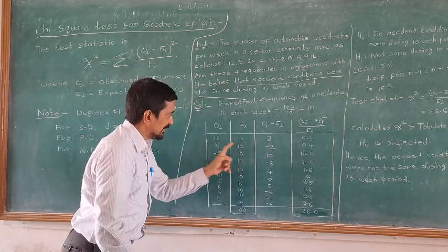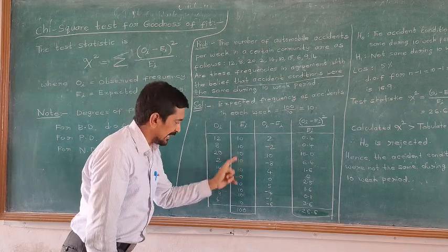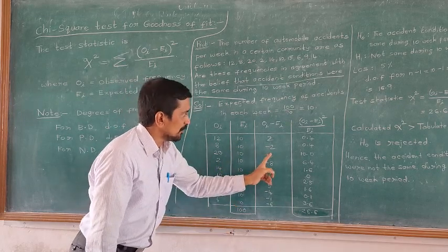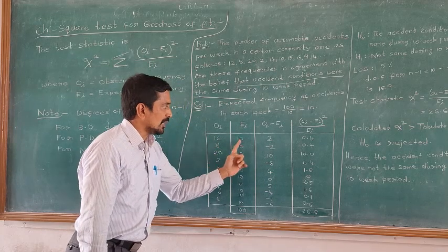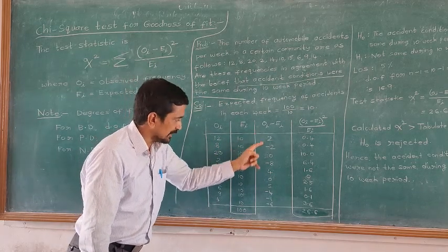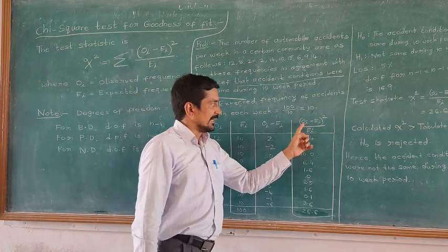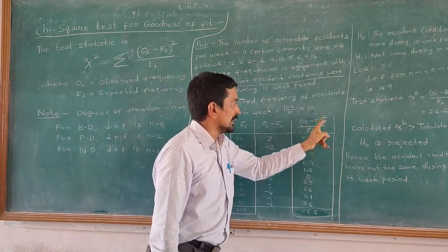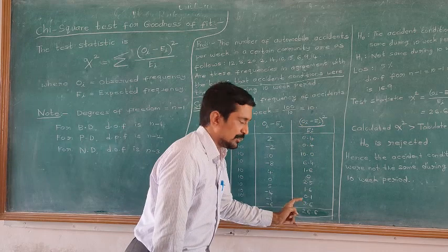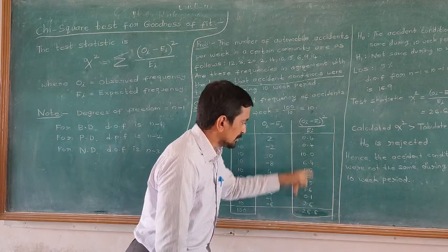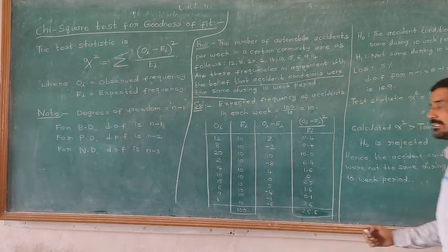Each week the expected frequency is 10. Then we find the differences between the observed values and the expected values. Finally, we calculate the chi-square statistic using (O_i minus E_i) squared divided by E_i. The total calculated value is greater than 6.6. Now we proceed to the test of hypothesis.